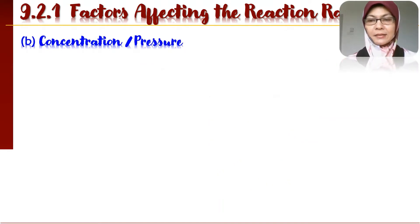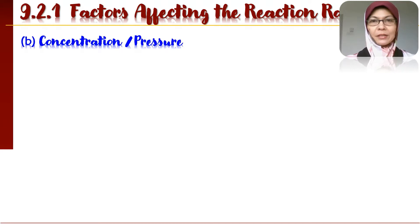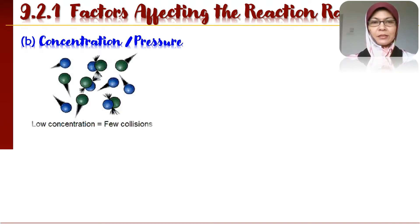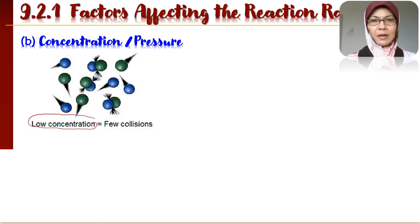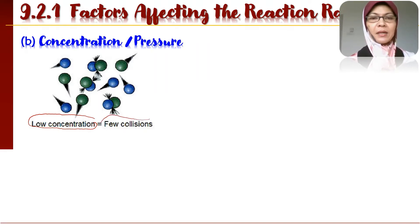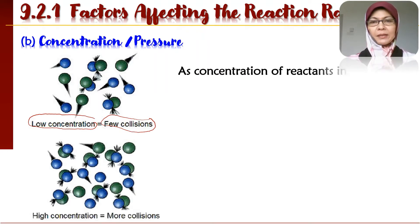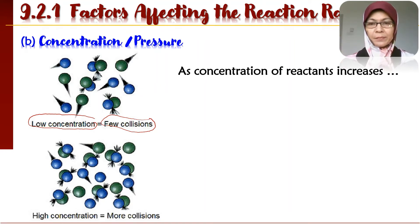Today we are going to discuss the factor of concentration. Bagaimana concentration will affect the rate of reaction. Look at this equation now. Ini adalah satu keadaan di mana kepekatan adalah rendah. Apabila kepekatan rendah, ia bermaksud bilangan zarah-zarah adalah sedikit. Bila zarah-zarah sedikit, maka hanya berlaku sedikit sahaja perlanggaran. Dan apabila kepekatan bertambah, maksudnya jika kita berada dalam situasi yang kepekatan zarah-zarah adalah tinggi, bermaksud akan berlaku lebih banyak perlanggaran.